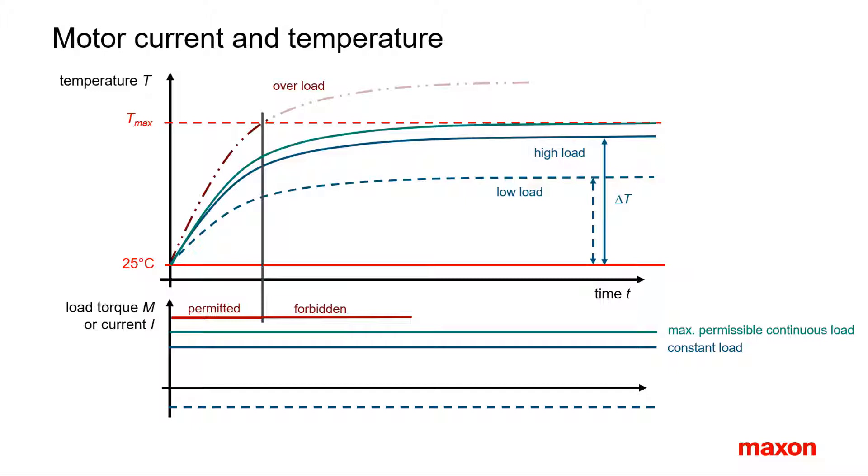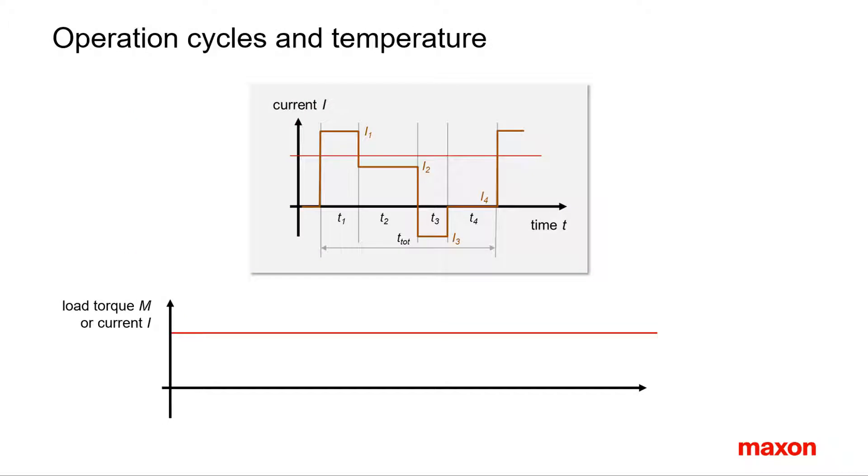What happens to this general picture if the load is not constant? Let's assume an operation cycle consisting of 4 load phases, T1 to T4, with different current levels, I1 to I4. As you can see, during phase 1 the current is higher than the maximum permissible current, while the current in phase 4 is zero.